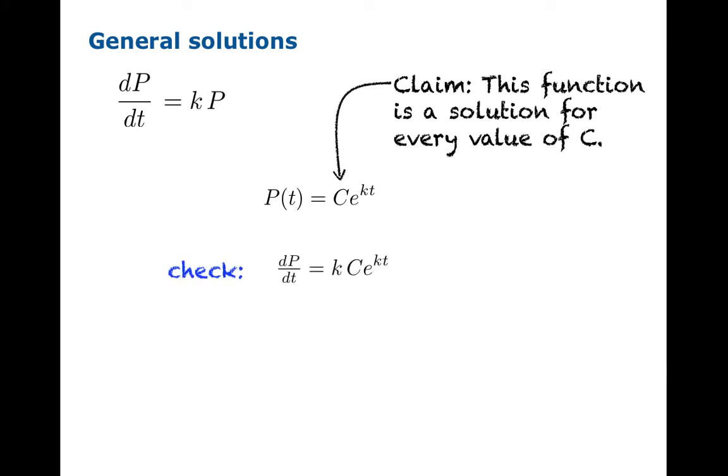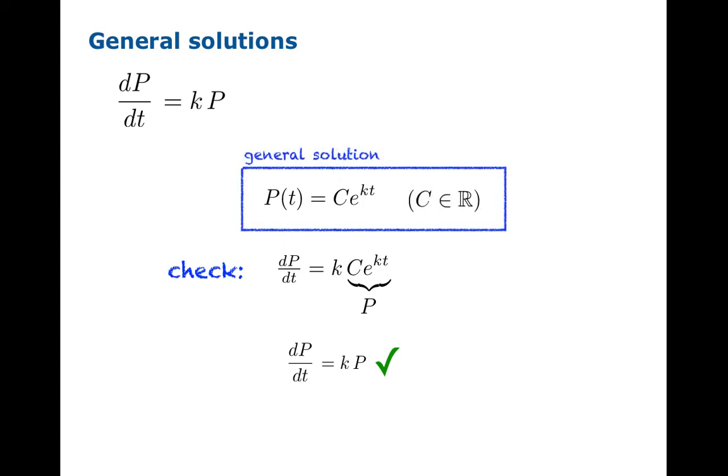and the chain rule forces a factor of k to pop out, and we recognize this quantity as p, and so we find that dp/dt does, in fact, equal kp. What we have verified is that this is a general solution to the differential equation.